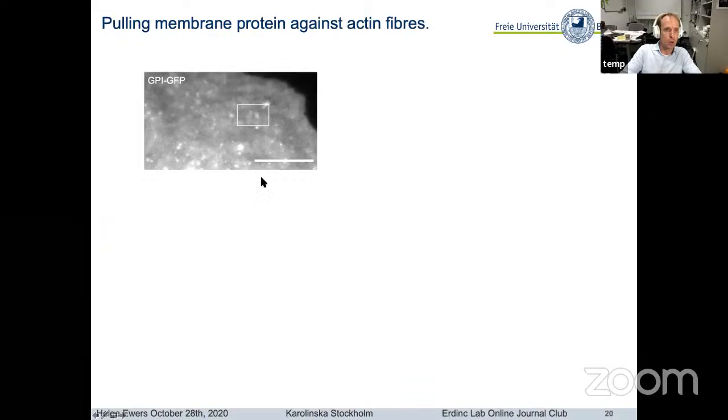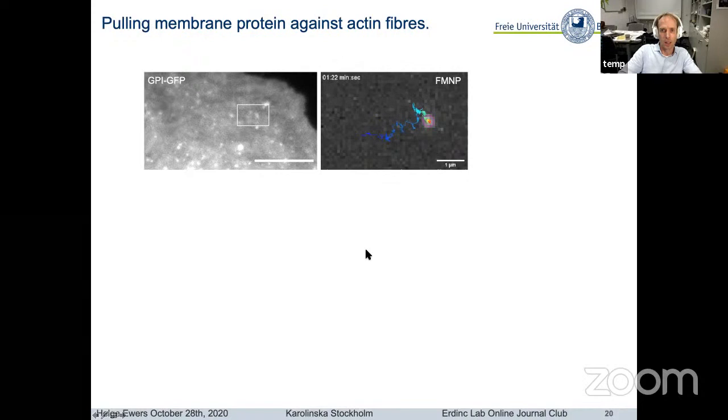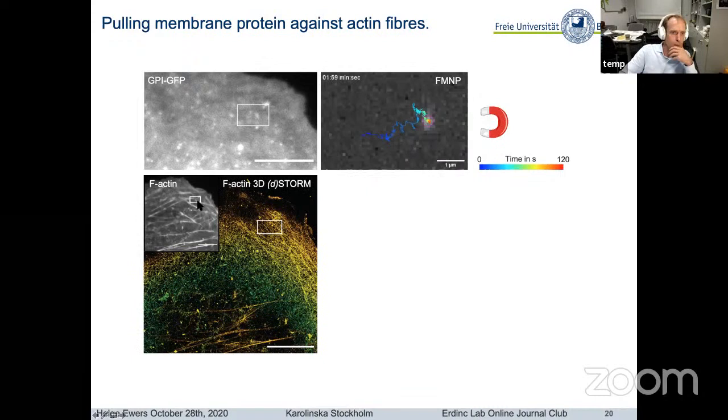Here you can see again GPI-GFP expressed in a CV1 cell. We can then see as we pull this molecule through the membrane, it kind of hits a barrier, slides along that barrier, and then it seems to get stuck. This is where the magnet is. So it tries to move towards the magnet, and then it somehow hits a barrier, and it finally gets stuck. Now if you look at the same area in wide field actin imaging, we can see that there's some prominent actin structures there. This is the dorsal actin in the 3D STORM.